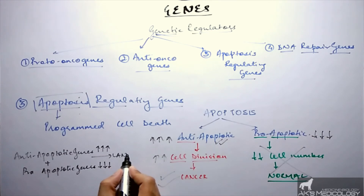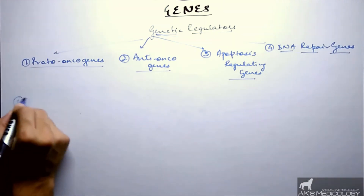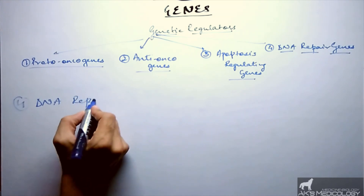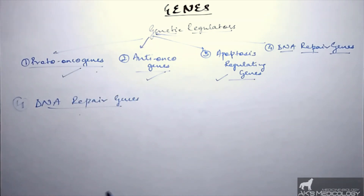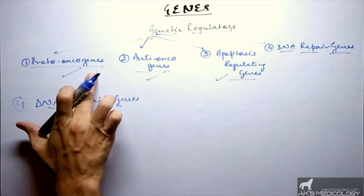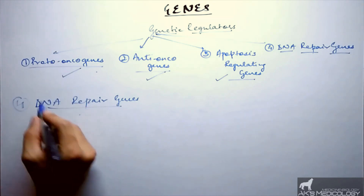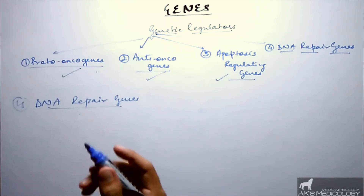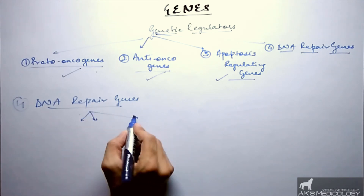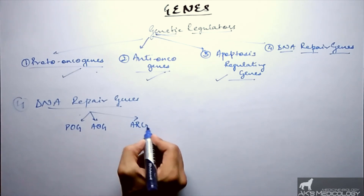The last and most important genetic regulators are the DNA repair genes. If proto-oncogenes undergo mutation and are injured, the DNA repair gene activates and tries to repair them. If it cannot repair the injured proto-oncogene, it kills the cell. The same happens when anti-oncogenes or apoptosis regulating genes are injured. So DNA repair genes keep a check over all three: proto-oncogenes, anti-oncogenes, and apoptosis regulating genes.